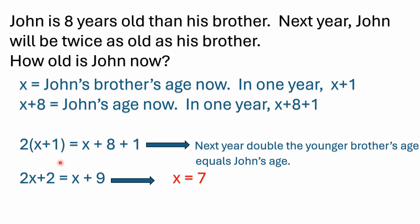John is eight years older than his brother. So we know the brother is the younger of the two. So why not make a variable? We'll call it x — it could be anything — but we'll set x equal to John's brother's age now. So we'll set that equal to the younger person's age in this problem.